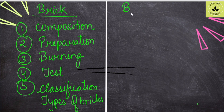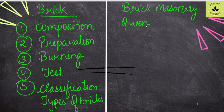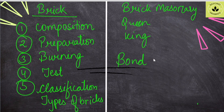In brick masonry, we have to look at different terms — remember the diagrams for Queen Closer, King Closer, Bat, Stretcher, Header, Beveled Closer, Mitred Closer. These are different closers in brick masonry. Then different bonds: English bond, Flemish bond, Dutch bond — these are different bonds in brick masonry. It is important to know which bond is used for a one-and-a-half brick wall.